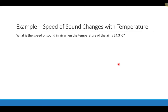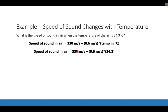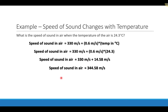Let's do an example of calculating the speed of sound at a particular temperature. What is the speed of sound when the air temperature is 24.3 degrees Celsius? The speed of sound in air is 330 meters per second plus 0.6 times the temperature. So 0.6 times 24.3 equals 14.58, and adding that to 330 gives us the speed of sound at 24.3°C as 344 meters per second.